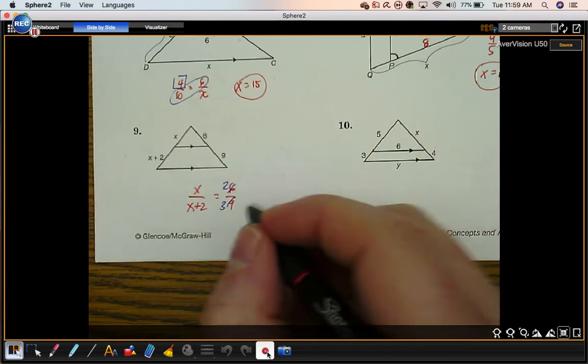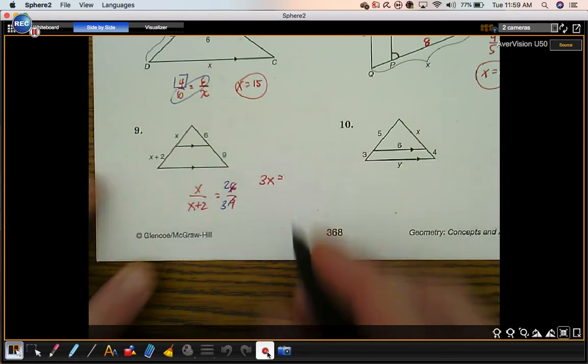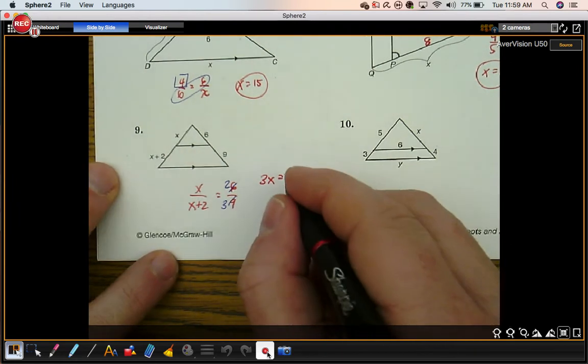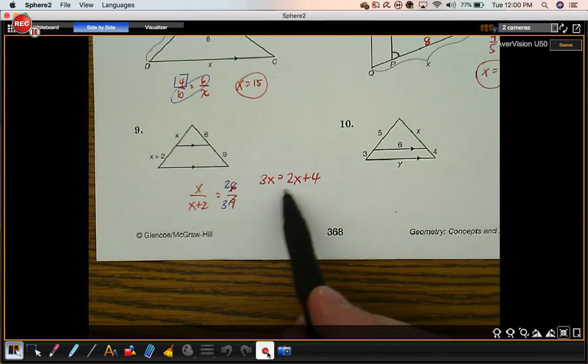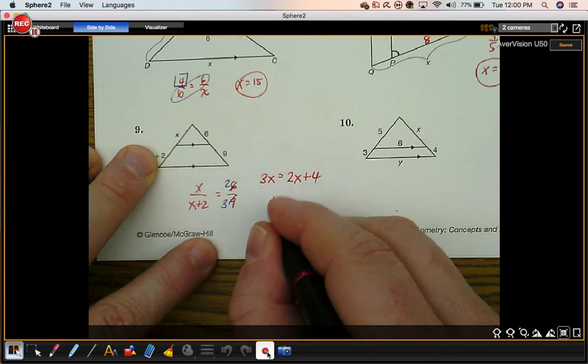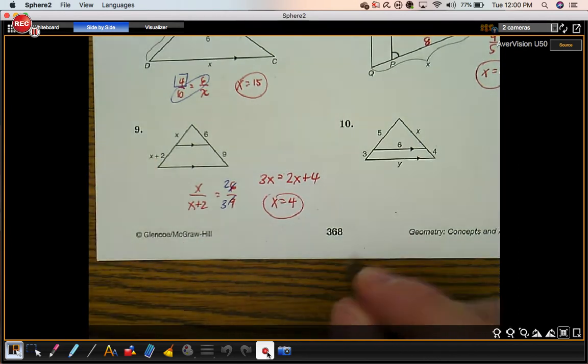So we're going to do 3 times x, which gives you 3x. That's going to equal 2 times this quantity, 2x plus 4. We're going to subtract 2x from both sides. So x is 4.